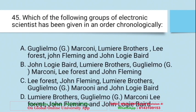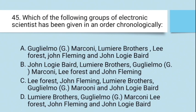Question: Which of the following groups of electronic scientists is given in chronological order? A. Guglielmo Marconi, Lumière Brothers, Lee de Forest, John Fleming, John Logie Baird; B. John Logie Baird, Lumière Brothers, Guglielmo Marconi, Lee de Forest, John Fleming; C. Lee de Forest, John Fleming, Lumière Brothers, Guglielmo Marconi, John Logie Baird; D. Lumière Brothers, Guglielmo Marconi, Lee de Forest, John Fleming, John Logie Baird. The right answer is D — first Lumière Brothers, then Guglielmo Marconi, then Lee de Forest, John Fleming, and John Logie Baird.